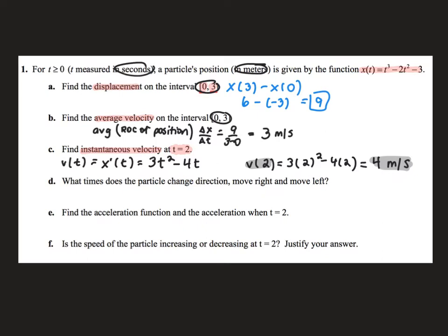My next question asks when does the particle change direction, when does it move right, and when does it move left. I'm going to look at where velocity equals 0 — that gives me my starting point for change in direction, and it will also show when I'm moving right and left when I put it into a sign chart. I take that velocity function, set it equal to 0, and solve by factoring out a t. These zeros don't automatically make it a change of direction — at this point it is just a stopping point. So now I'm going to do a sign chart.